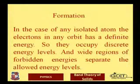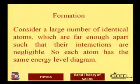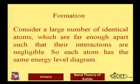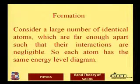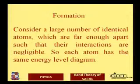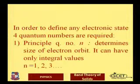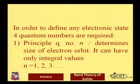Consider a large number of identical atoms which are far enough apart such that their interactions are negligible — each atom has the same energy level diagram. If we consider isolated atoms inside a solid, say sodium, then the outer orbital, which is 3s1, can be characterized by four principal quantum numbers.